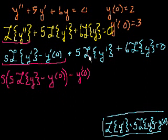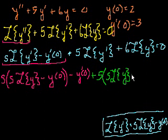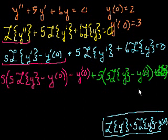And now I'll switch colors. Plus 5 times the Laplace transform of y'. Well, we could use this again. So 5 times s times the Laplace transform of y minus y(0). Plus 6 times the Laplace transform of y, all of that is equal to 0. I know this looks really confusing, but we'll simplify right now.